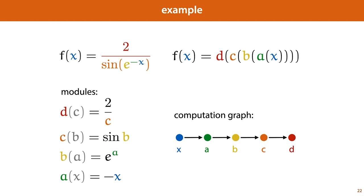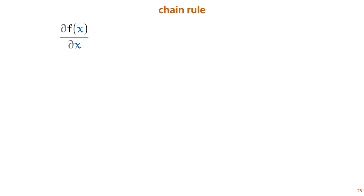We can draw this as a computation graph. Each node in the computation graph represents an intermediate value in our computation. The incoming arrow points to the value it was derived from, and the outgoing arrow points to the value for which it will be the input. Because we've described our function purely as a composition of modules, we can work out the derivative purely by repeatedly applying the chain rule.